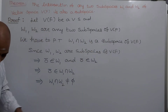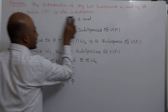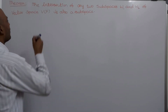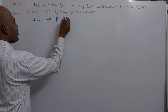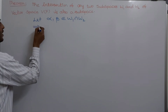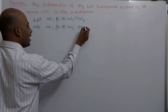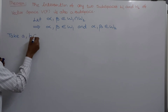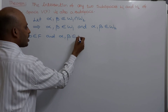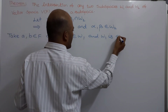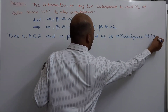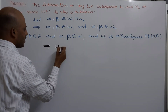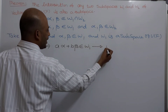Now our aim is to show that it is a subspace of v of f. Let us take any two elements alpha, beta belonging to w1 intersection w2. By the definition of intersection, alpha and beta belong to w1 and alpha and beta belong to w2. Take any two scalars a, b from the field f. Since alpha, beta belong to w1 and w1 is a subspace of v of f, every subspace satisfies the condition that a*alpha + b*beta belongs to w1. Let this be equation number one.